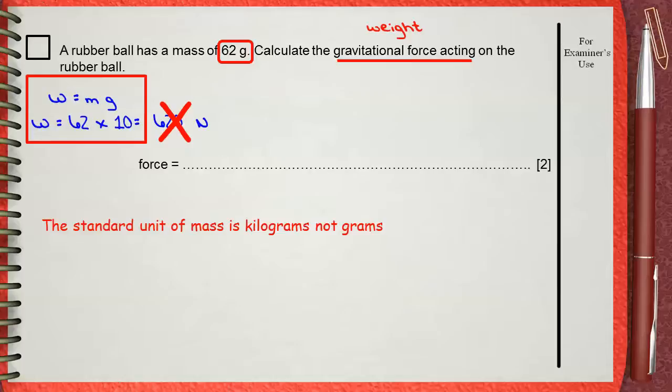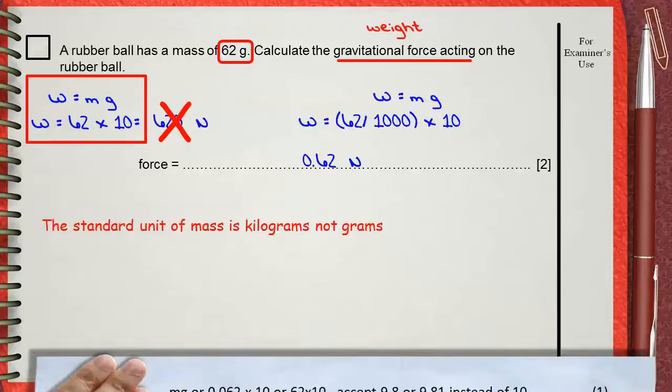So, if you say that W equals MG, this means that M, the mass, will be 62 divided by 1000 to change it to kilograms, multiplied by 10, which is G. This shows that the weight will be 0.62 Newtons.